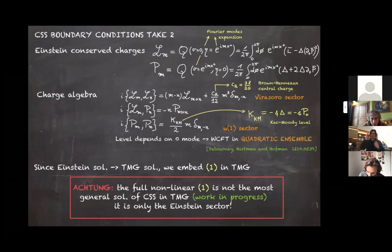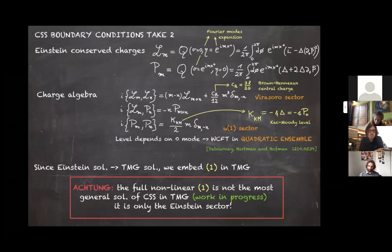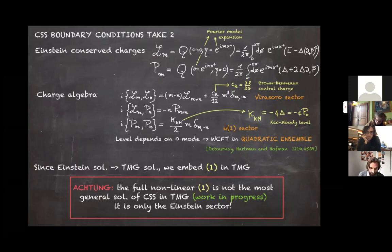The U(1) Kac-Moody level depends on delta — one of the metric fields — and one can show that delta is the zero mode of the P charge. This is a feature showing that the warped CFT we consider at the boundary is found in the so-called quadratic ensemble, not the canonical ensemble. One can go from the quadratic to the linear — canonical — ensemble using a state-dependent asymptotic vector field.